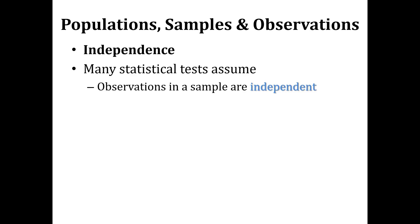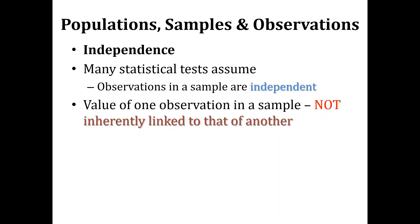Now we discuss another important attribute of sampling: independence. Independence means not being dependent on something or being free. Many statistical tests assume that observations in a sample are independent — not linked to each other — which means the value of one observation is not inherently linked to that of another; they are all independent of each other.